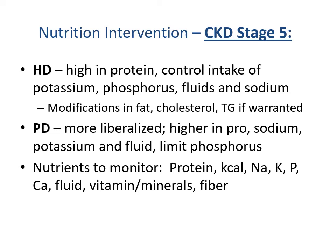At stage 5, patients begin dialysis. For hemodialysis patients, a high protein diet is recommended with restriction of potassium, phosphorus, fluids, and sodium, and possibly monitoring and modifying total fat and cholesterol. The peritoneal dialysis diet is more liberalized — still higher protein, with lower but still some restriction on sodium, potassium, fluid, and phosphorus. For both diets, protein, calories, sodium, potassium, phosphorus, calcium, fluid, other vitamins and minerals, and fiber are monitored. PD patients have less restriction than hemodialysis patients on these electrolytes.